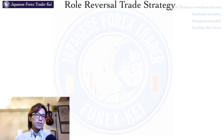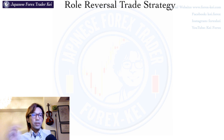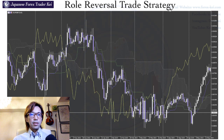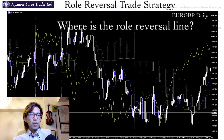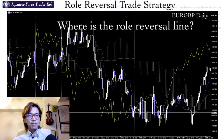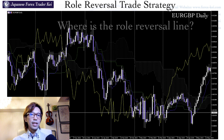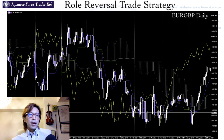Role reversal happens when the former support becomes a resistance and vice versa. Take a look at this chart — this is a daily chart of EURGBP. Think about where the role reversal is happening on the market. Can you identify where that is? If you want to think, just stop the video for a second. Alright, the answer is right here on this blue line.